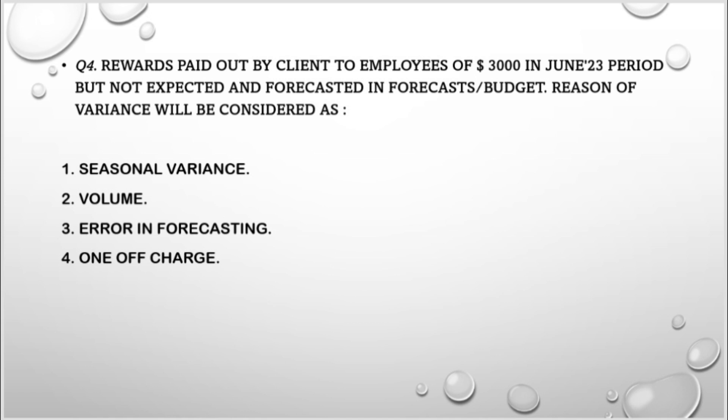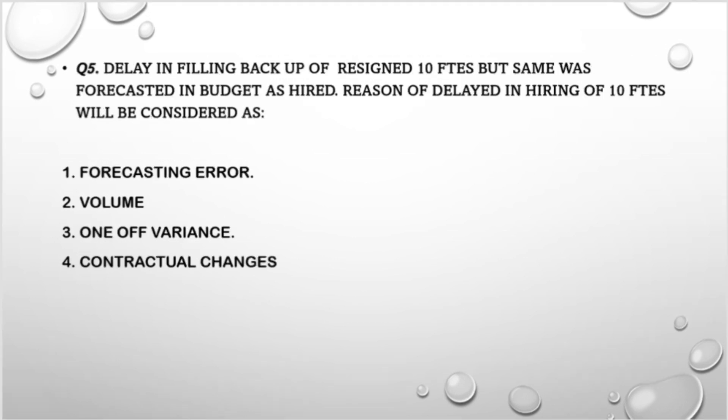Question 4: Rewards paid out by a client directly to employees of $3,000 in the June 2023 period, but not expected and not forecasted in any forecast or budget. So the client paid $3,000 directly to our employees as rewards, and this was not expected or included in any budget or forecast. The reasons for the variance will be considered as: (1) Seasonal variance, (2) Volume, (3) Error in forecasting, (4) One-off charge.